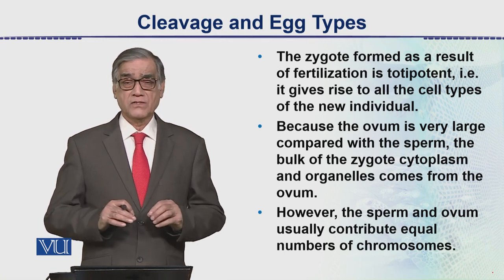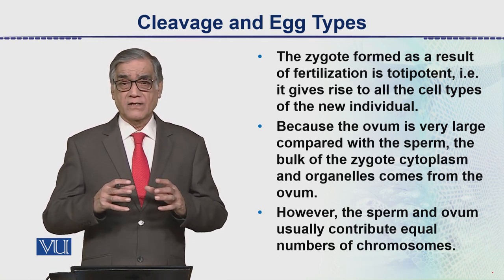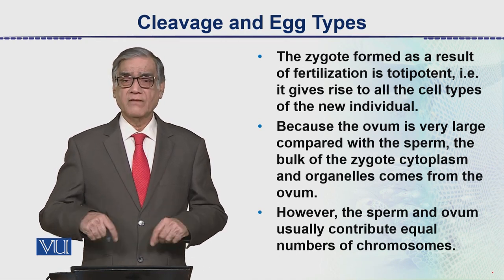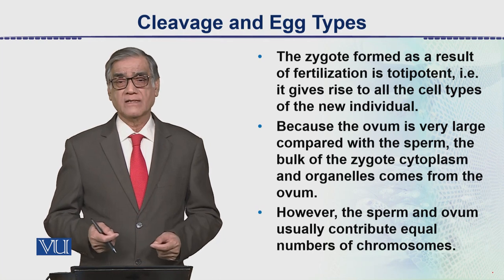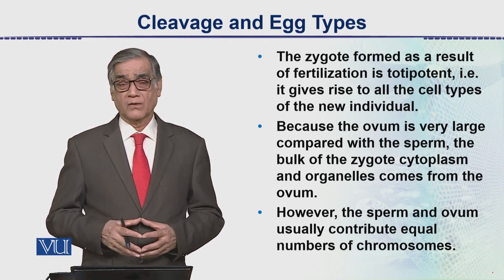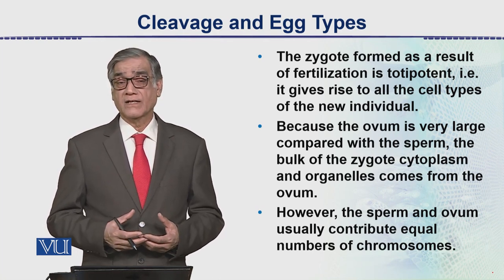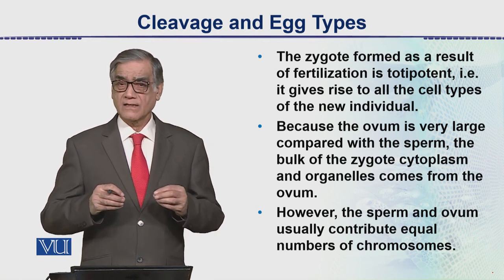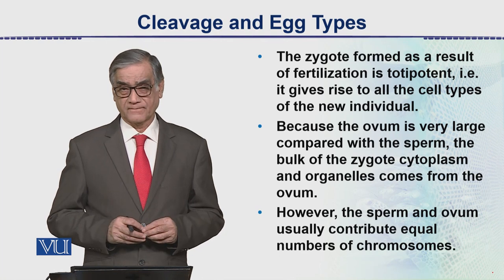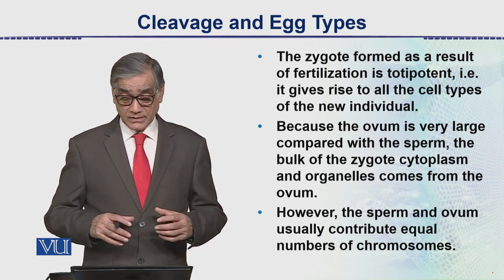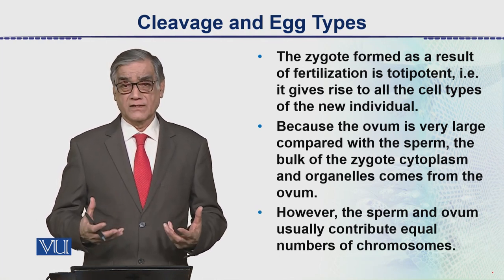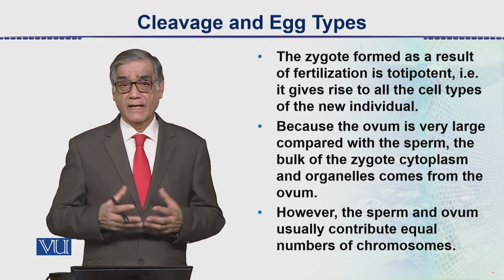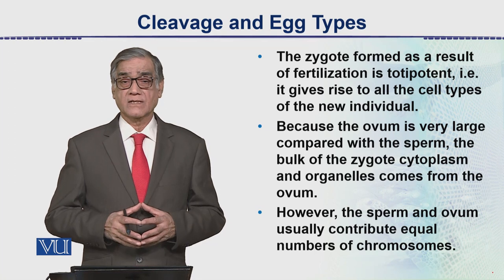But in cleavage, when a cell divides, its size decreases and it starts dividing again, so the group of cells that form have a considerably smaller size compared to the original or parent cell. This is the difference between normal cell division which is mitosis and cleavage.